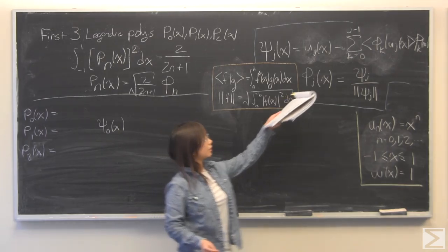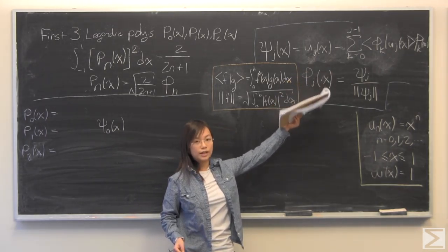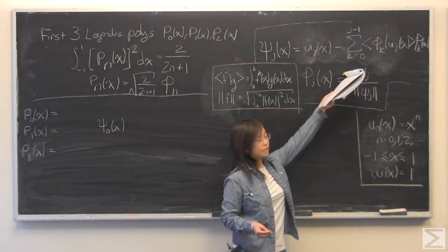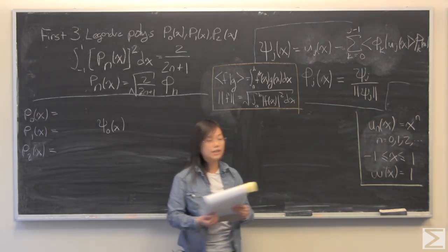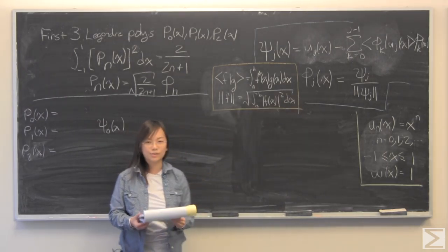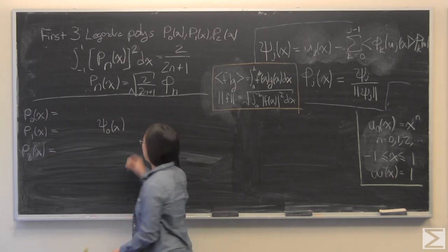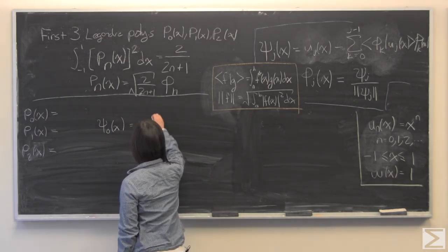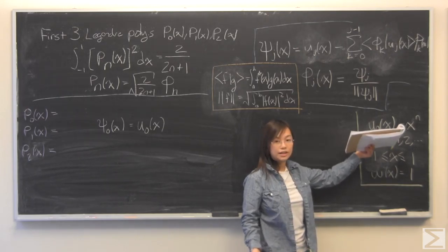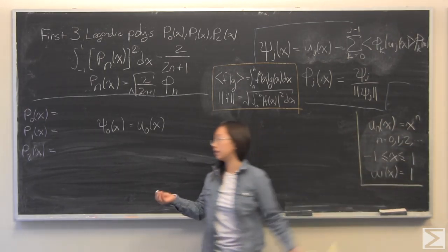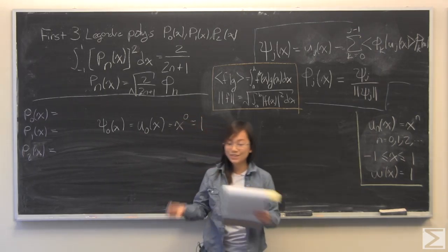As I have written up here, that is going to be equal to u sub 0 of x for psi 0 of x. And then this sum isn't going to be anything for 0, because it's just not going to be there. So very simply, this is going to be equal to u sub 0 of x. u sub 0 of x, we see u sub n of x is x to the power of n, plug in 0, you get 1. So it was a very simple first step.